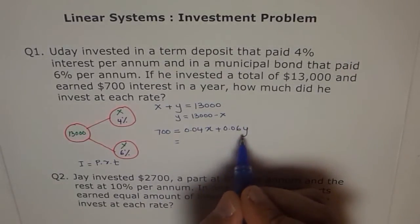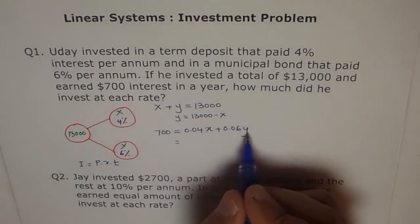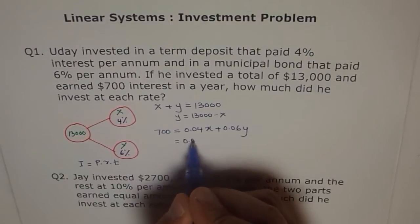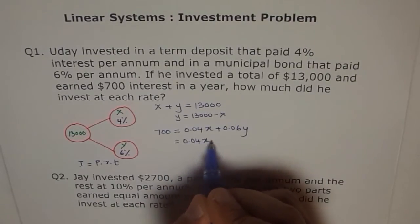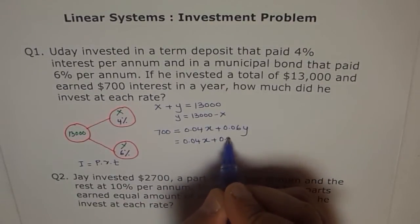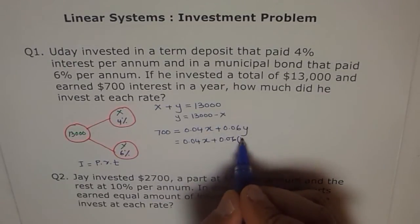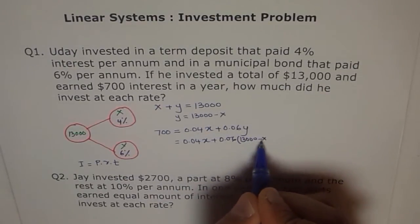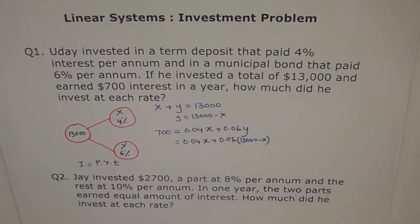Now, we have got two variables in the second equation. We will use the first to substitute the value of Y and get equation 1 variable. That's our strategy of solving linear equations. So, we get 0.06 times. What is Y? 13,000 minus X. Now, simple. Expand, simplify and get your answer.